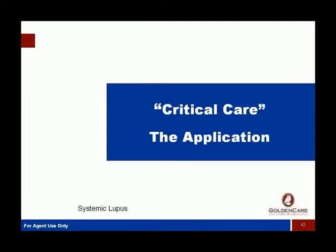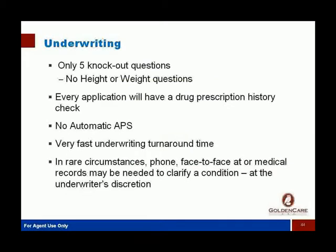We also went further and took our underwriting guide for long-term care insurance and looked at all those different conditions that are field declines in long-term care that we can now offer at least some coverage for with the critical care plan — lots of things we had to walk away from before where we can now keep the conversation open.